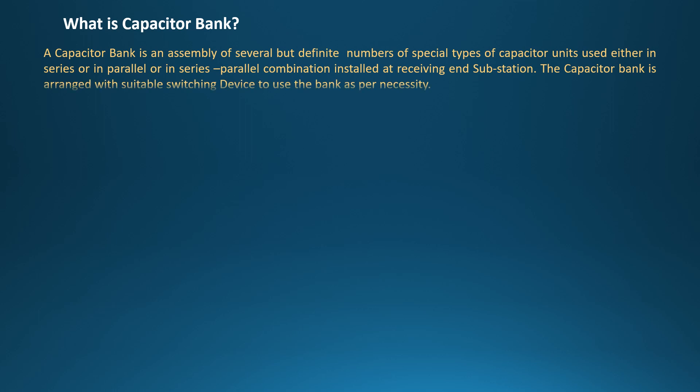What is a capacitor bank? A capacitor bank is an assembly of several but definite numbers of special type of capacitor units used either in series, or in parallel, or in series-parallel combination, installed at a receiving end substation. The capacitor bank is arranged with a suitable switching device to use the bank as per necessity.